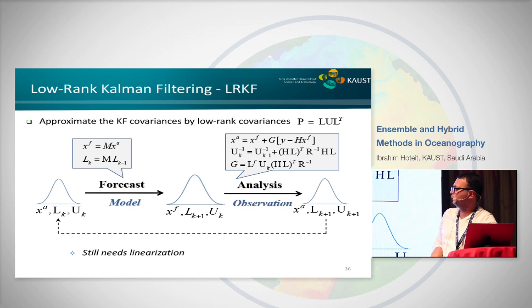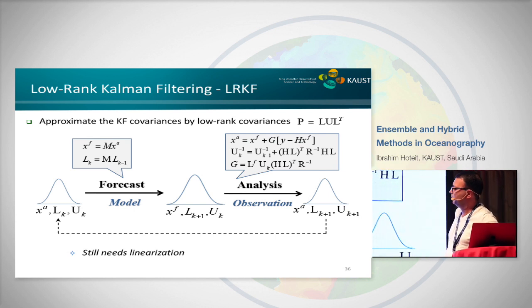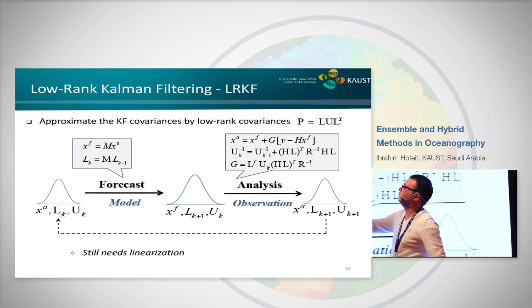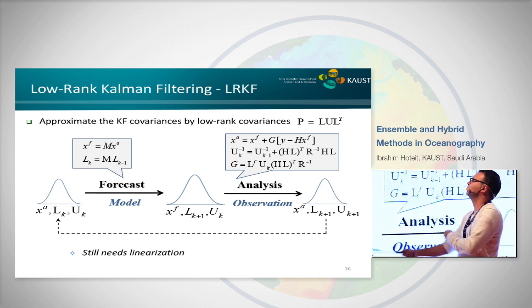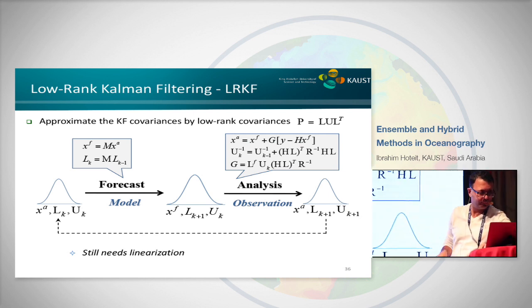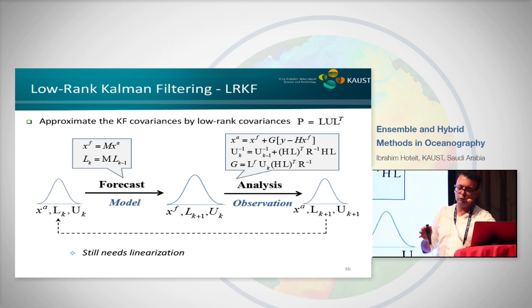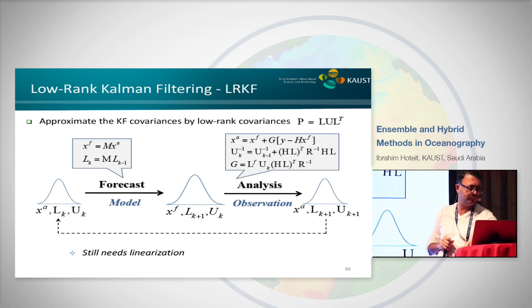If you take this low-rank decomposition and put it in the Kalman filter equations, you don't deal with P anymore — you deal with L and U, which we can handle as matrices. I think Mercator is applying something like this operationally right now. You get a Gaussian distribution, avoiding P by working with L. But you still need to linearize the model — if M is not linear, you have to linearize and compute the evolution of L.